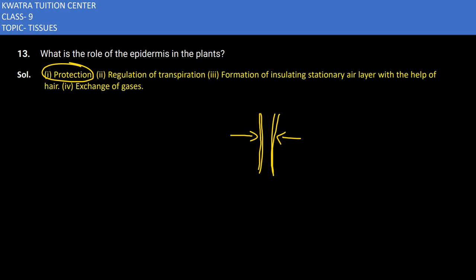The second role is the regulation of transpiration. Water is transmitted out from the outer surface — whether leaves, stem, or roots — so it shows some kind of transpiration. Transpiration is the loss of water in the form of water vapor.